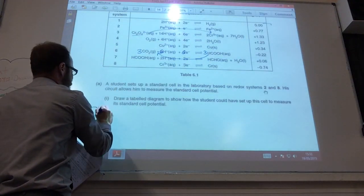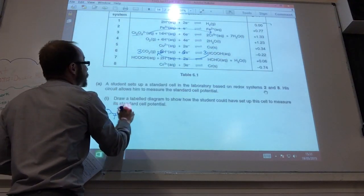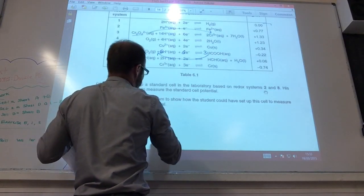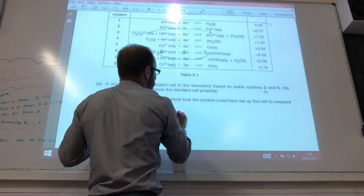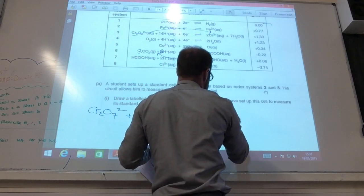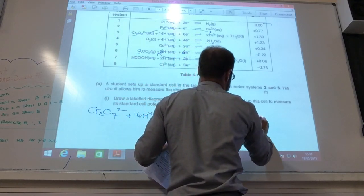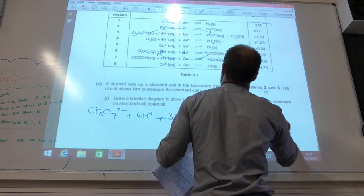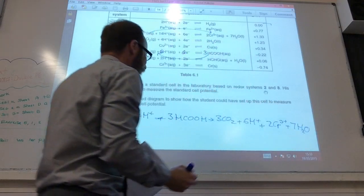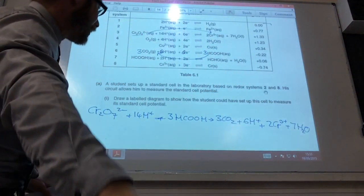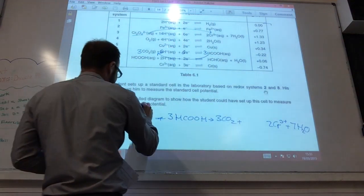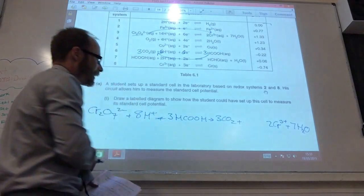And so, I will end up with it being Cr2O7 2- plus 14H+ plus 3 methanoic acids goes to 3CO2 plus 6H+ plus 2Cr3+ plus 7H2O, and if you have a look, you can see I can cancel that. I've got 6H+ there that can go, and that's going to leave me with 8H+ there.